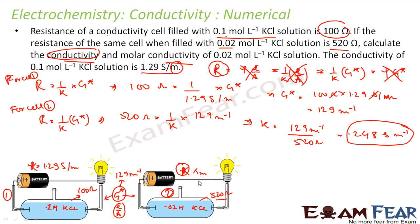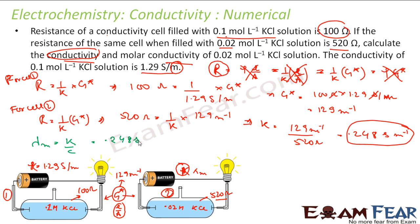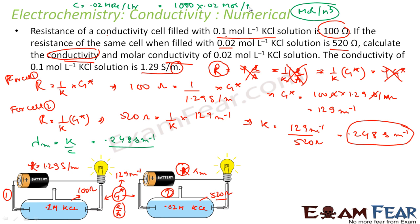The next thing is to find the molar conductivity. Molar conductivity lambda equals K divided by C — conductivity divided by concentration. Conductivity is 0.248 S/m. Since the unit is Siemens per meter, I have to write the concentration in moles per meter cube. The concentration is 0.02 mol/L, which equals 1000 times 0.02 moles per meter cube.